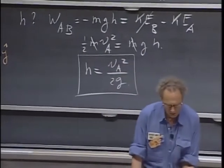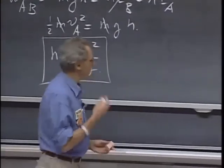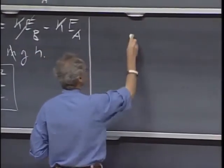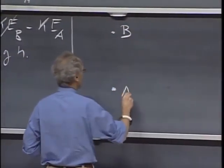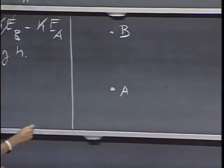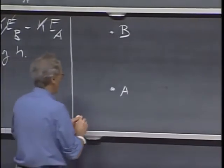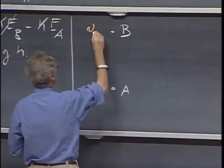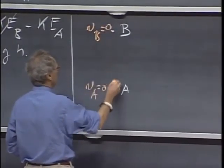I'd like to do a second example. I lift an object from A to B. I, Walter Lewin. I take it at A. It has no speed here. vA is zero. It has no speed there. And I bring it from here to here.